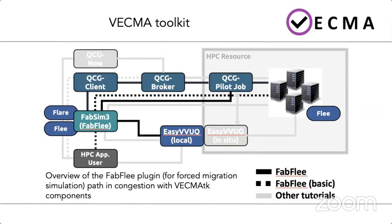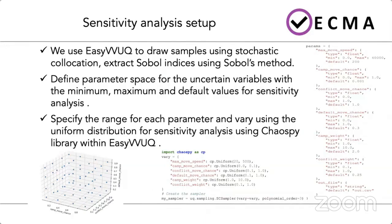To perform sensitivity analysis, we use EasyVVUQ by drawing samples using stochastic collocation and extract Sobol indices using Sobol's method. We first define the parameter space for uncertain variables with the maximum and default values, then provide the range for each parameter using uniform distribution with polynomial order of 3, using the ChaosPy library within EasyVVUQ.